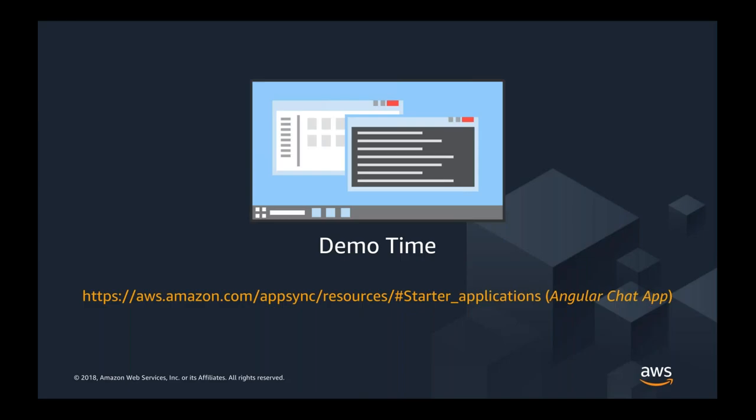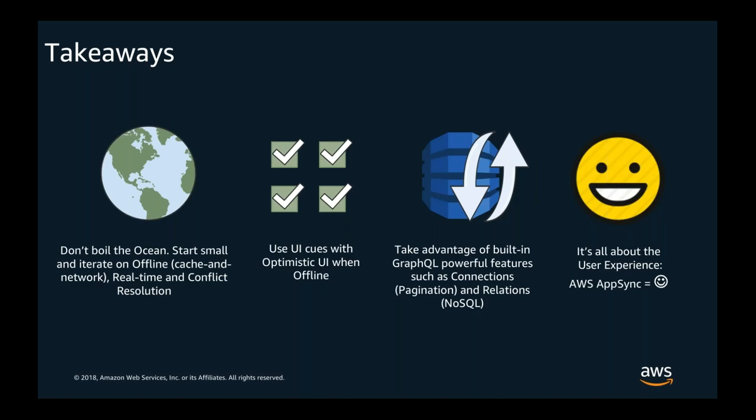So let's go back to the slides. I'd like to share some takeaways from my experience using GraphQL and AppSync. Don't boil the ocean — start small, test, try, and iterate so you can understand the concepts. Not every single UI component needs to be real time from the get-go or require complex conflict resolution strategies. Use UI indicators to let your users know they're offline so they can relax and trust the application will manage the connection automatically and send data when they're back online. Take advantage of the powerful built-in GraphQL capabilities such as pagination and relations in NoSQL. It's very important to provide a good user experience so users keep engaged. AppSync checks a lot of boxes to make it easy and seamless.